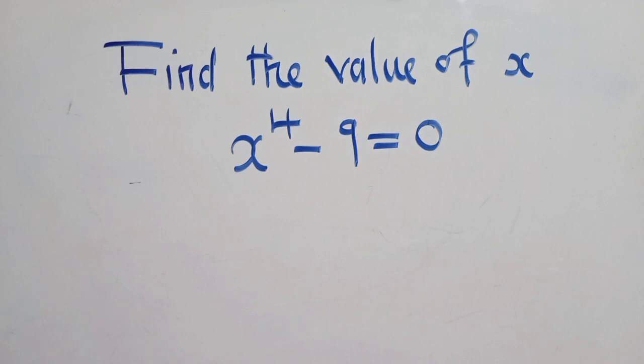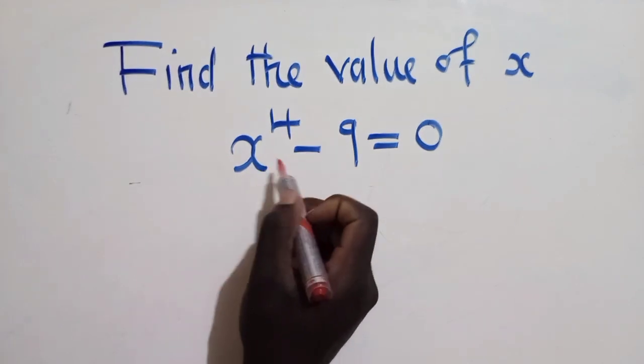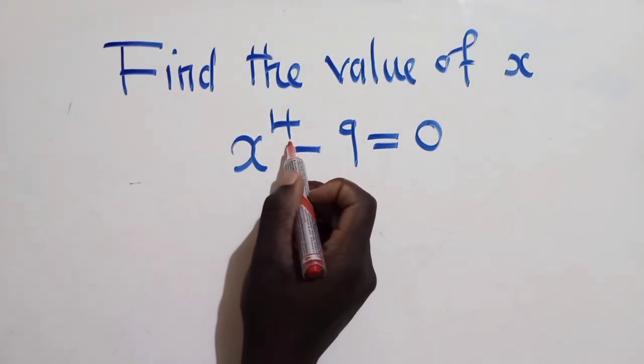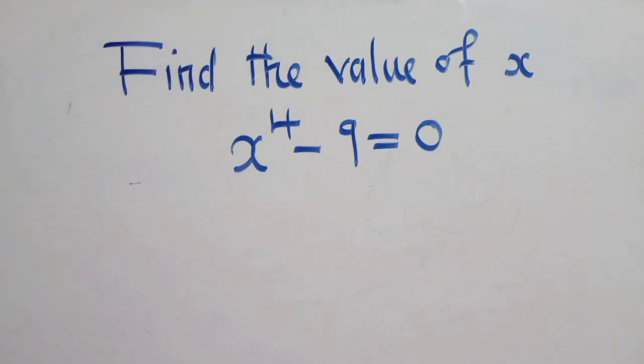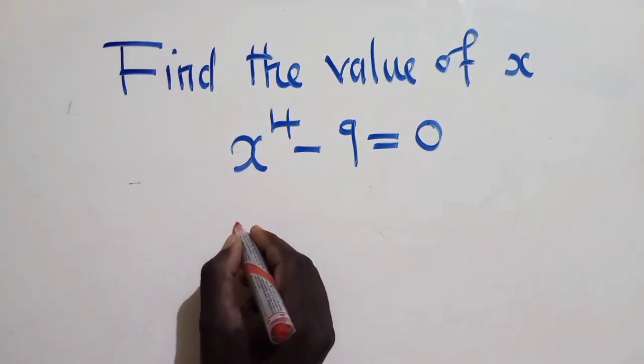For us to be able to find the value of x, we first need to apply difference of two squares here. Now look at this one. We've got a power 4. And difference of two squares when there's a power 4, it can't work. So we need to have a power 2 somewhere here.